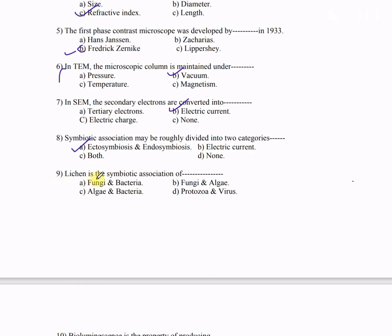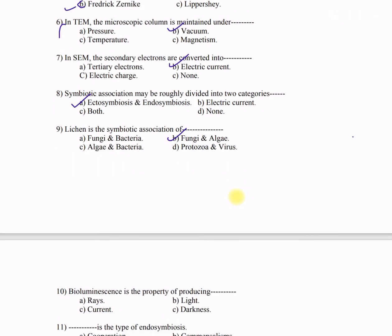Question 9: Lichen is the symbiotic association of — A) fungi and bacteria, B) fungi and algae, C) algae and bacteria, D) protozoa and virus. The correct option is B — fungi and algae. The fungal partner is saprophytic while the algal partner is photosynthetic.